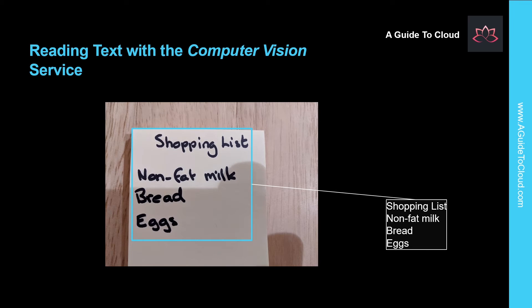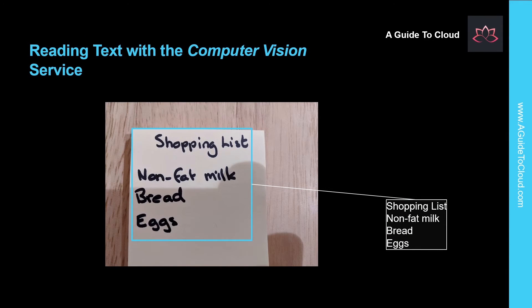Much of the early work on implementing OCR was performed by postal services to support automatic sorting of mail based on postal codes. Since then, the state of the art has advanced, and it is now possible to build models that can detect printed or handwritten text in an image and read it line by line or even word by word. Use cases for OCR include note-taking, digitizing forms such as medical records or historical documents, and scanning printed or handwritten checks for bank deposits.